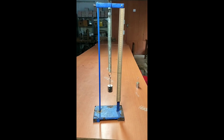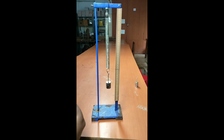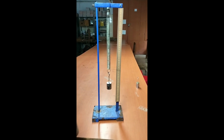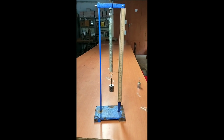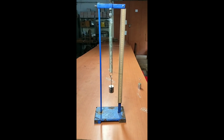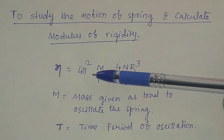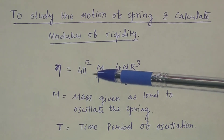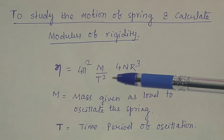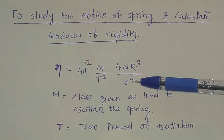For small oscillations, you measure them using a telescope. It will be better if you measure the time period of small oscillations using a telescope. To calculate the modulus of rigidity, you have to use the formula: eta is equal to 4 pi squared m by T squared, into 4nR cubed divided by small r to the power 4.